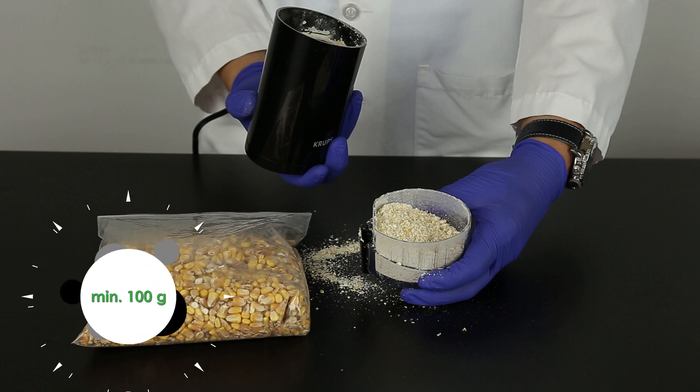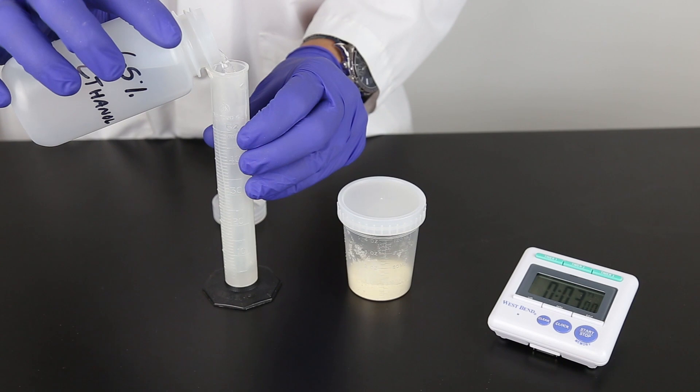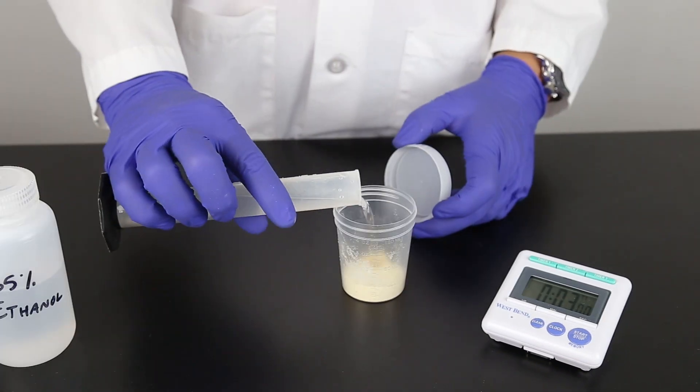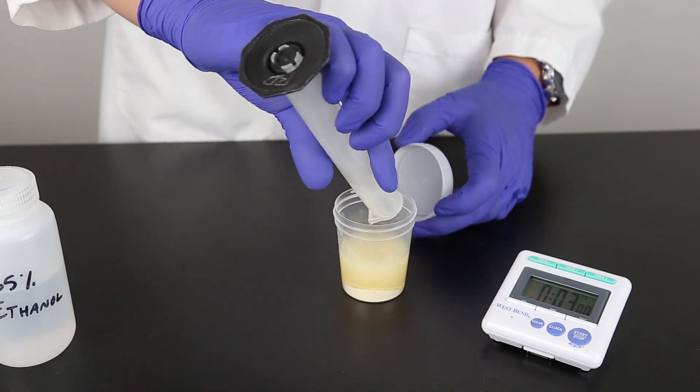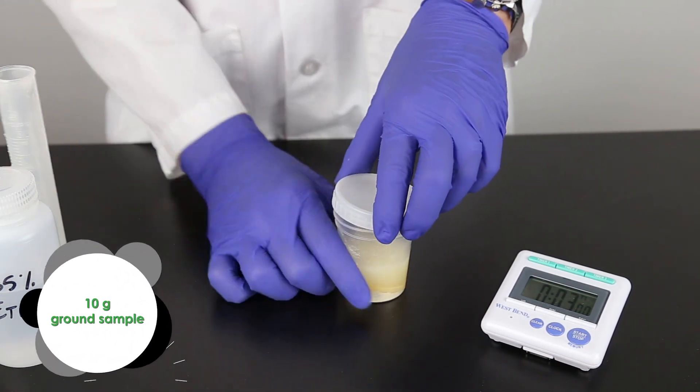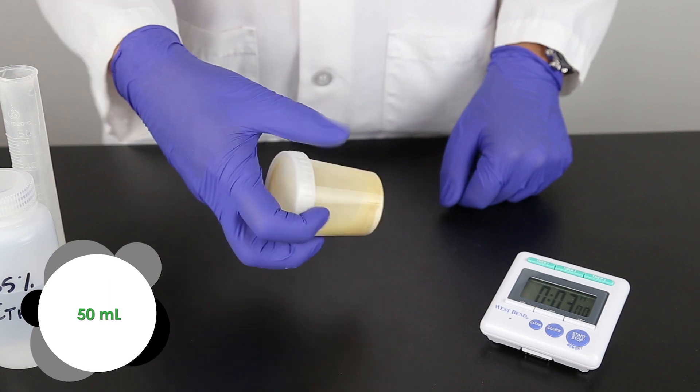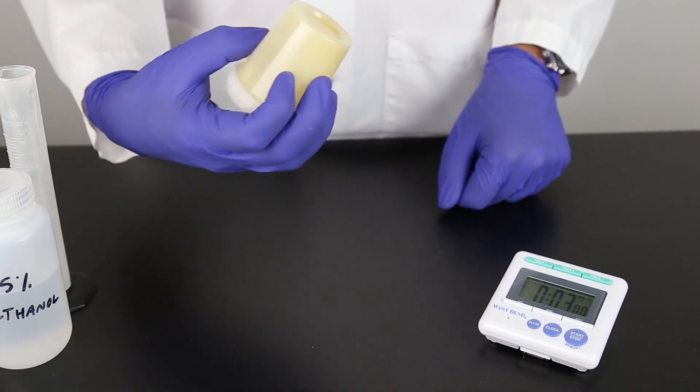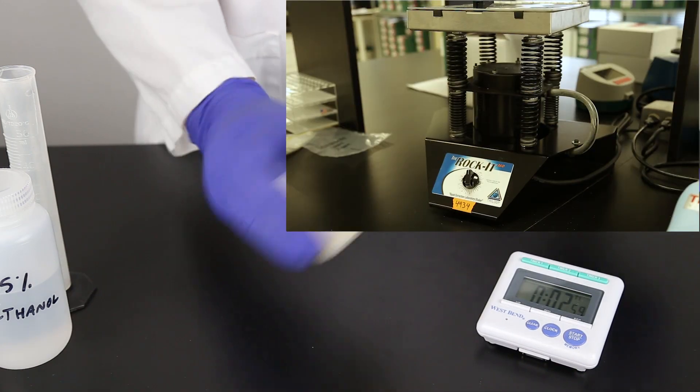It is best to grind a minimum of 100 grams of your sample. The sample is extracted with a ratio of 1 part sample to 5 parts 65 percent ethanol. For this example, we're using 10 grams of ground sample with 50 milliliters of 65 percent ethanol. Vigorously shake for 3 minutes using hand or mechanical means.